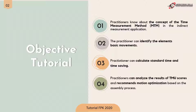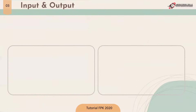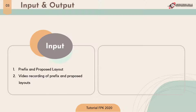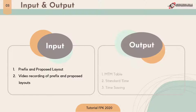Fourth, the practitioner can analyze the result of the TMU scores and recommend motion optimization based on the assembly process. For the inputs: first is prefix and purpose layout, second is video recording of prefix and purpose layout. For the outputs: first is the MTM table, second is standard time, and third is time saving.